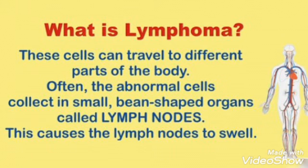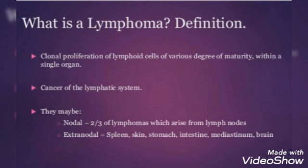These cells can travel to different parts of the body. Often the abnormal cells collect in small bean-shaped organs called lymph nodes, which causes the lymph nodes to swell. Lymphomas can be termed as a clonal proliferation of lymphoid cells of various degrees of maturity within a single organ, or we could say it is a cancer of the lymphatic system.